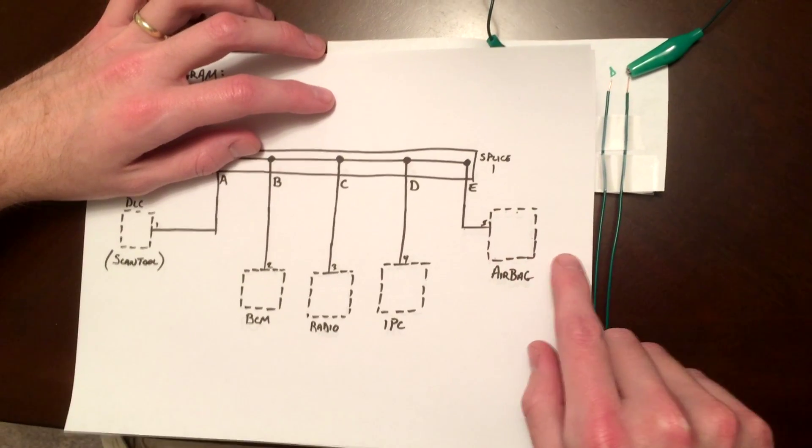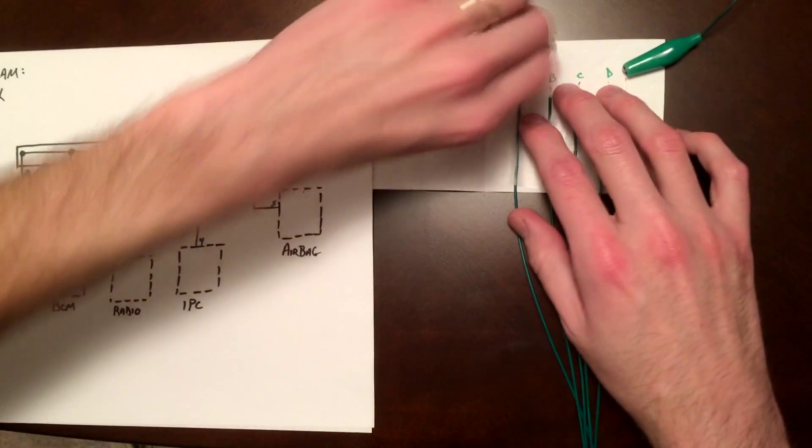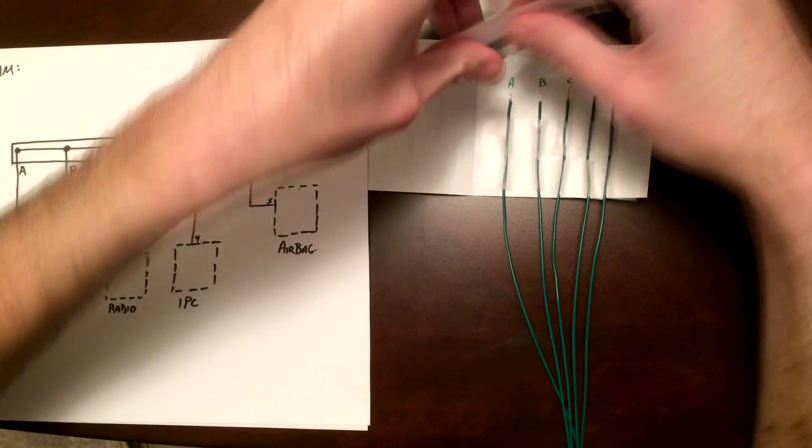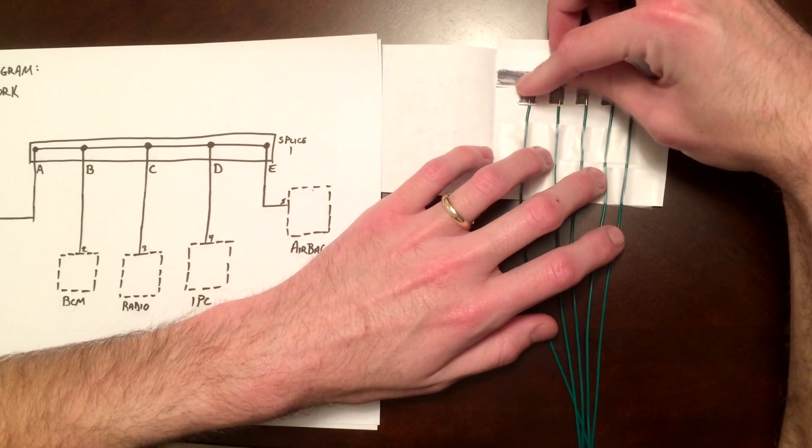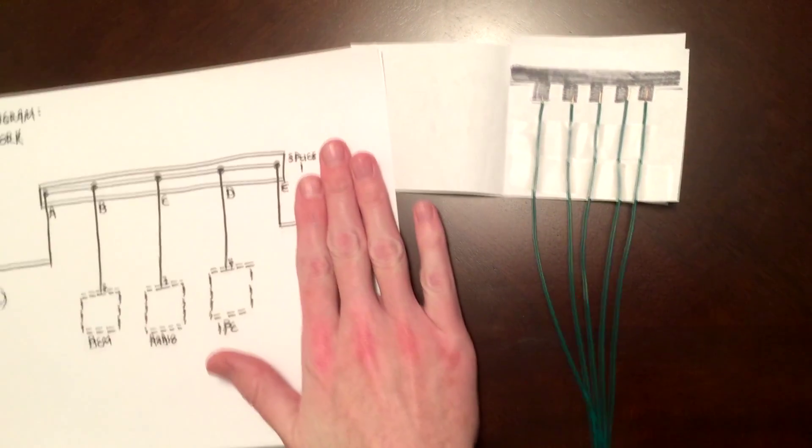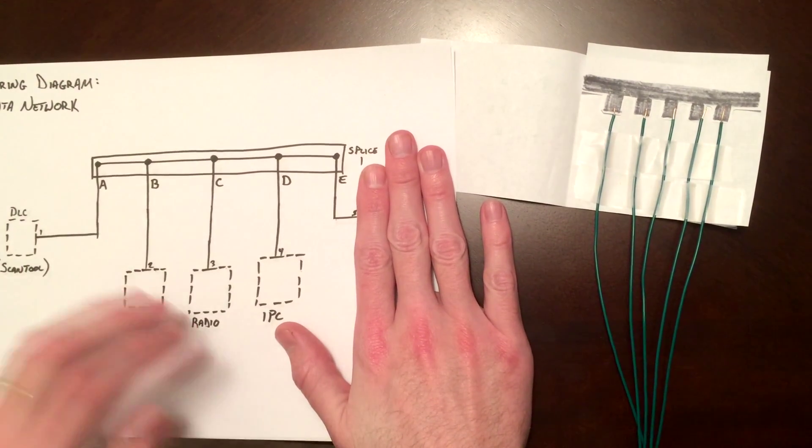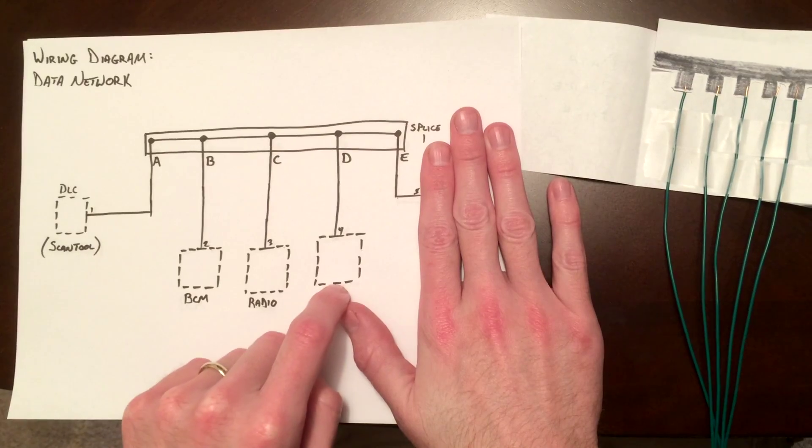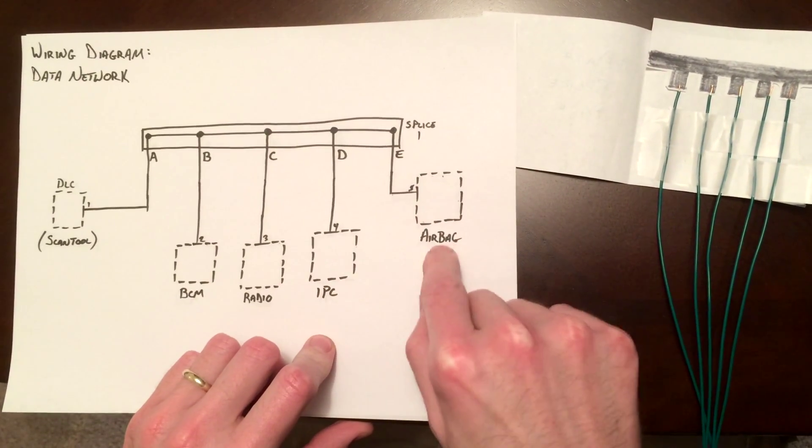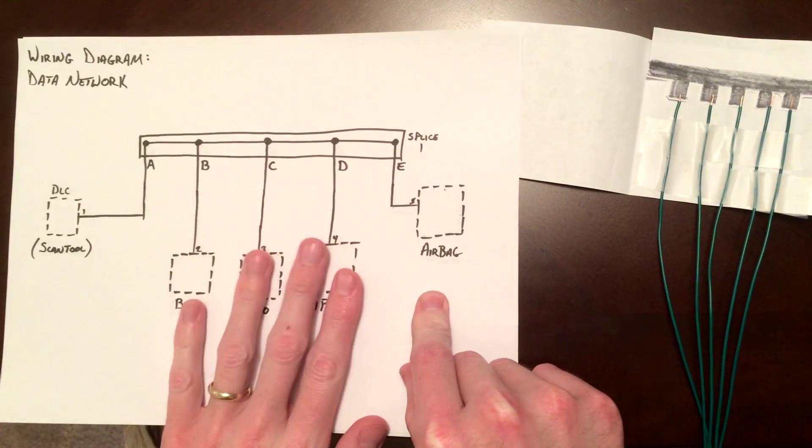And so what you can do is unplug your airbag module, and then remove your jumper wires, and plug the comb back in to your splice pack. So you'll be isolating this part, but you'll still have everything here. If you have communication now to the body, and the radio, and the cluster, you now know that your airbag module is causing the issue and pulling all this down.